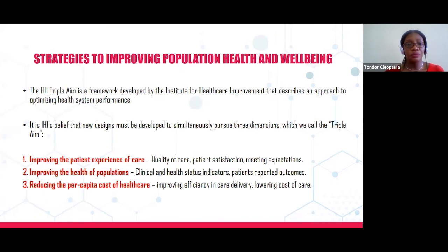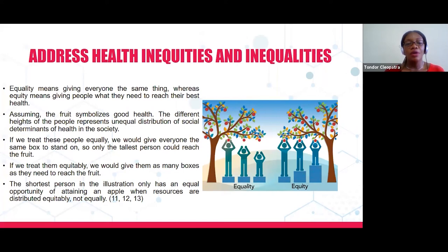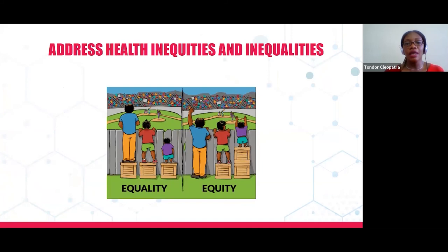We can't talk about the determinants of health without addressing health inequities and health inequalities. Equality means giving everyone the same thing, whereas equity means giving people what they need to reach their best health. If the fruit symbolizes good health and the different heights of people represent unequal distribution of social determinants, treating people equally by giving them the same size boxes means only the tallest person reaches the fruit. Treating them equitably gives them as many boxes as they need, so the shortest person also has an equal chance to obtain health.